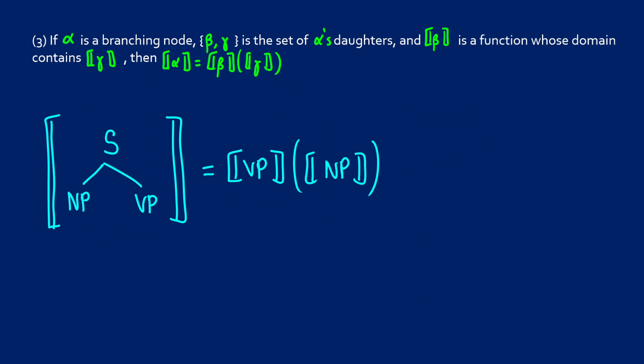But what is going to happen if we have a node that branches out into two other nodes? So basically what we're saying here is that if alpha is a branching node and we have beta and gamma as daughters, so this can look two different ways. It doesn't need to be beta then gamma, it could be gamma then beta.